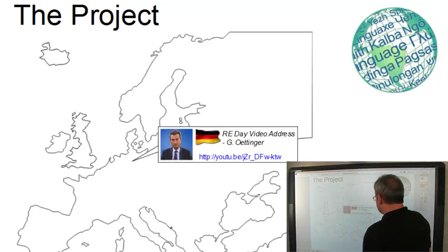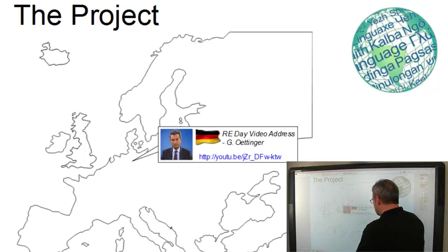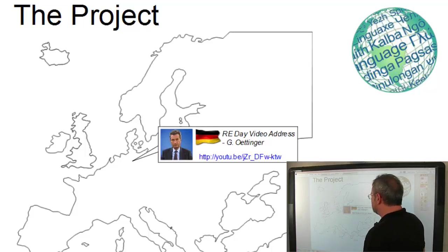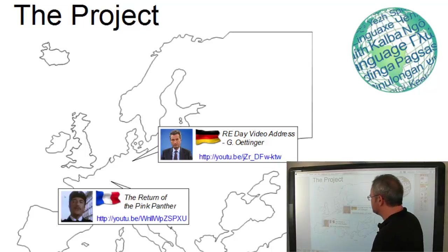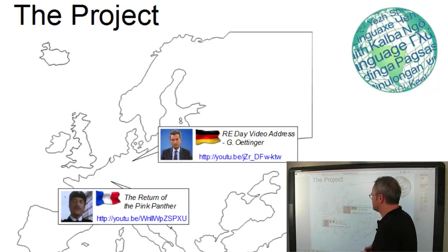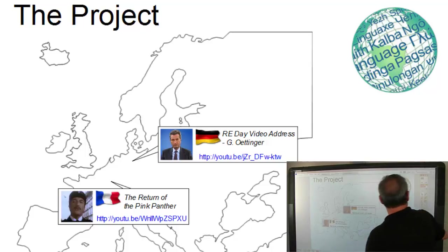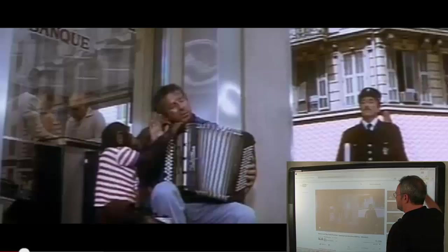A German speaker with a strong German accent speaking English, and a speaker from France who uses English with a strong French accent. Let us look at them and let's start with the Frenchman.